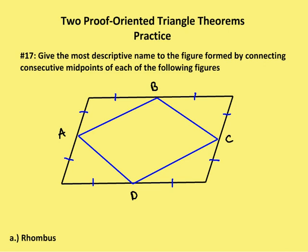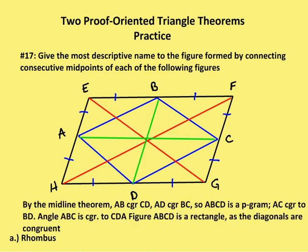The first one is going to be a rhombus. So let's say that my rhombus is E, F, G, H, and I want to figure out what the figure is formed — A, B, C, D — some type of figure. By the midline theorem, we're going to draw two diagonals in red: HF and EG.